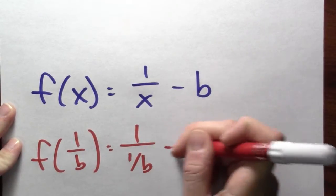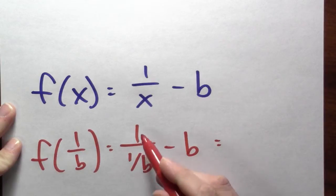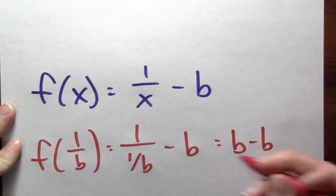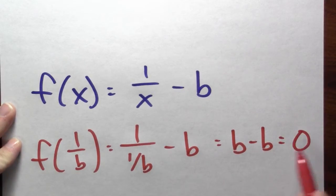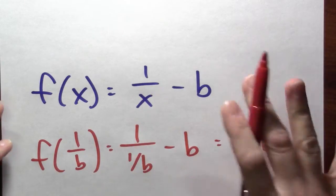that's one over one over b minus b. But one over one over b, the reciprocal of b is just b. And b minus b is in fact zero. So this function f does have one over b as a zero.